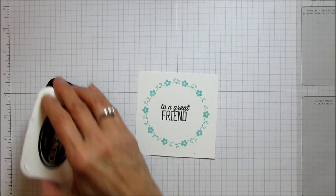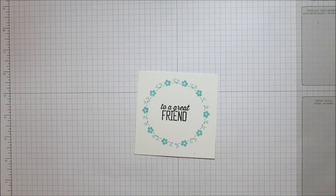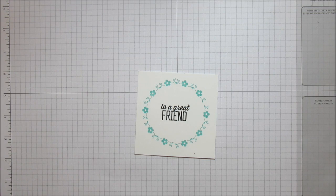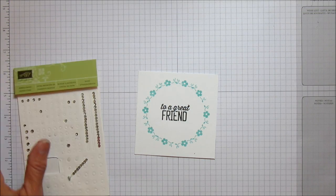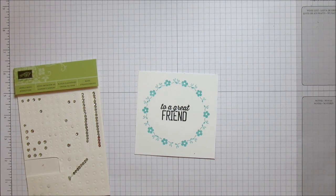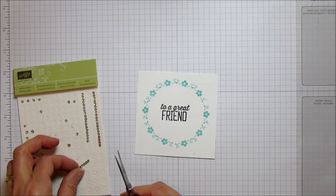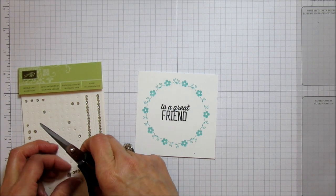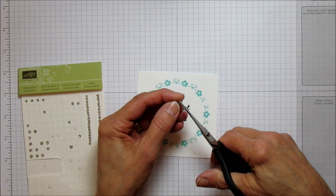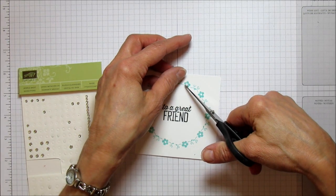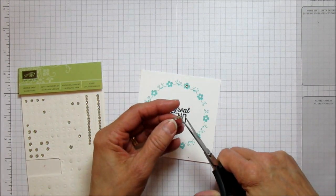Then what I did is I used some little rhinestones. I don't know where my little pointy is, so I'm going to just grab my scissors here, and I'm going to grab these little ones and just put these on the centers of the flowers.